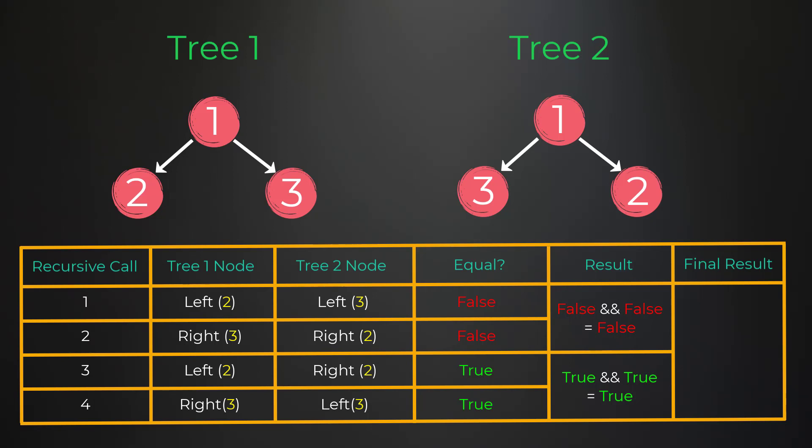So what we just did was essentially two different checks: one if the subtrees are equal as is, and another check if the subtrees are equal when flipping. If either of the checks are true that means the subtrees can become equivalent. So from level one we do false OR true which results in true, and that will become our final result. The false portion comes from the two recursive calls checking if the subtrees are equal as is, and the true portion is checking if the subtrees are equal when they flip. If either of those checks are true, the subtrees in both trees can become equal.